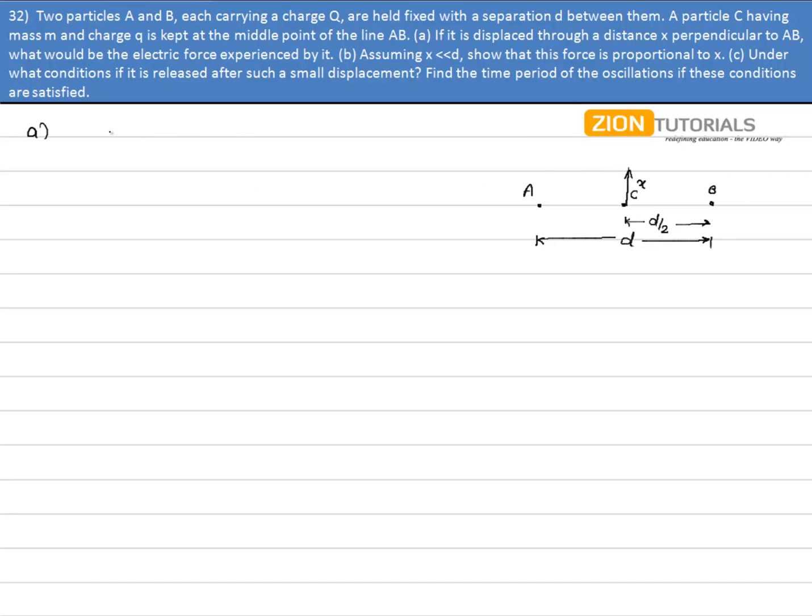One thing to be noticed is that when charge C is displaced by distance X, then the force on C due to A will be equal to the force on C due to B. Let us say the line of force between A and C is F_CA and the line of force between C and B is F on C due to B.